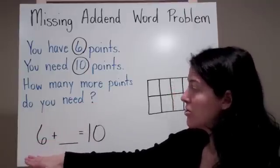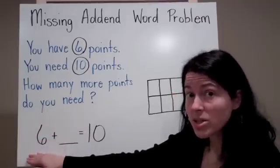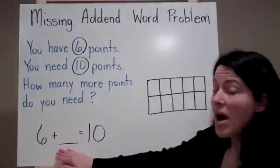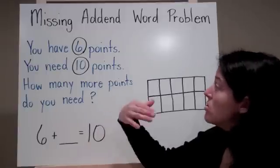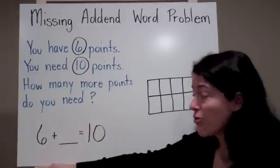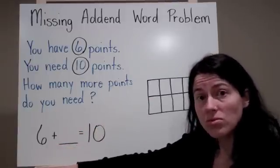Here is your equation. You know that you already have 6 points. You have to earn some more points so that you can have a total of 10 points. Use your tens frame to figure out how many more points do you need.